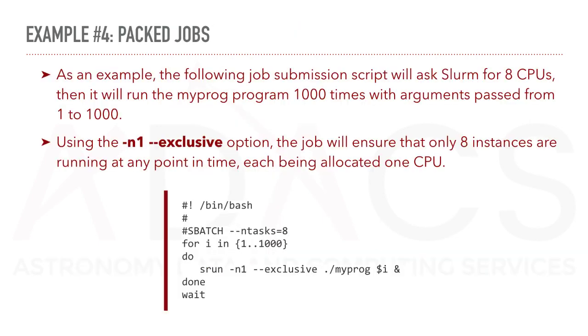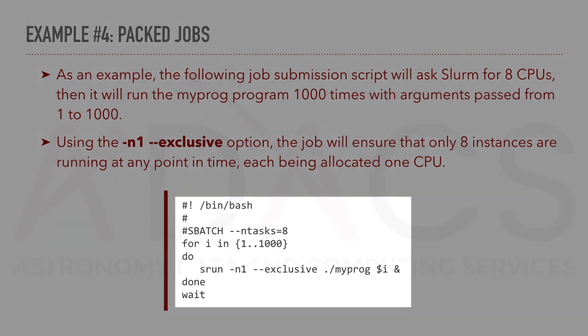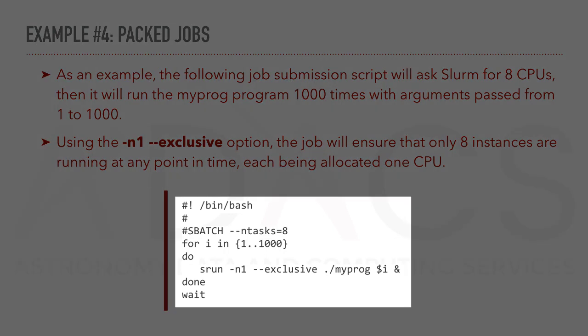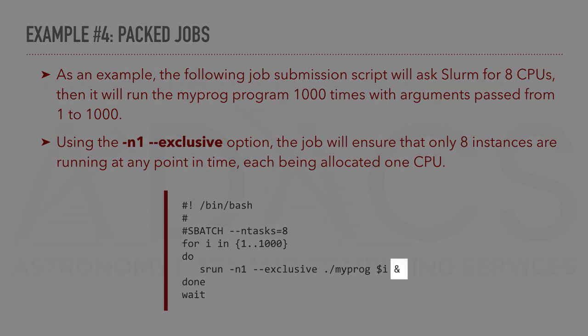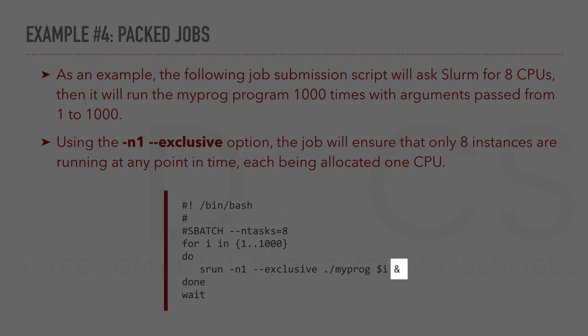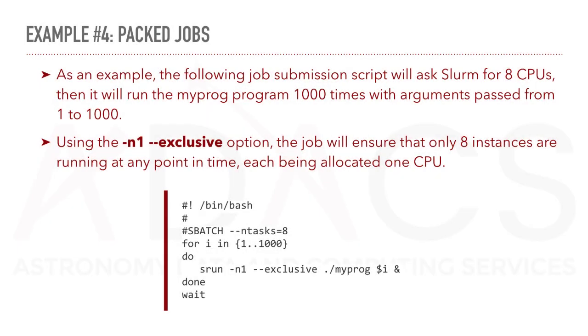Our last example will be a packed job. The following job submission script will ask Slurm for eight CPUs, and then will run the program using variables from 1 to 1000. The thing to note here is the ampersand sign at the end of the srun command, meaning each program will run on a specific process. Using the N1 exclusive option, the job will ensure that only eight instances are running at any point in time, each being allocated one CPU.